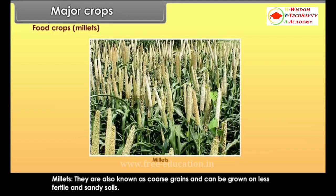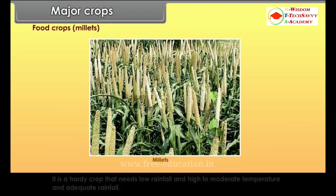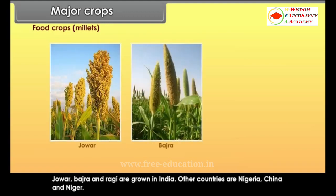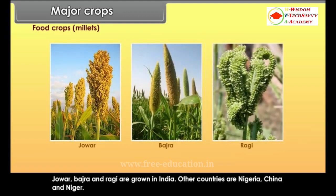Millets are also known as coarse grains and can be grown on less fertile and sandy soils. They are a hardy crop that needs low rainfall and high to moderate temperature. Jowar, Bajra and Ragi are grown in India. Other producing countries include Nigeria, China and Niger.